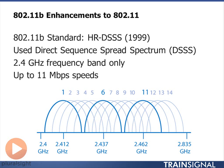A lot of people ask why 802.11a didn't come out first. Well, 802.11a was also defined in 1999, but it used an OFDM radio, which is far more complex. So 802.11b products came to market before 802.11a products, even though A and B were defined at the same time from a standards perspective.